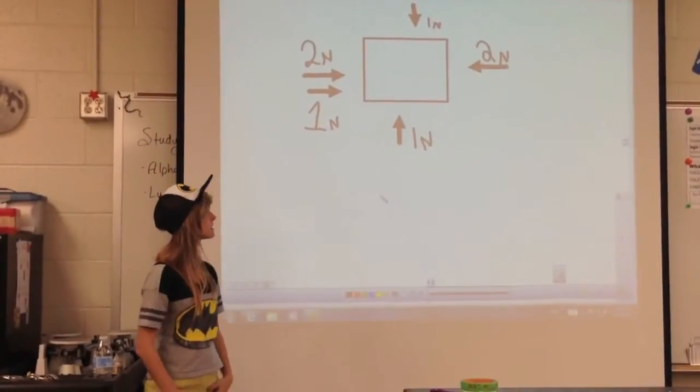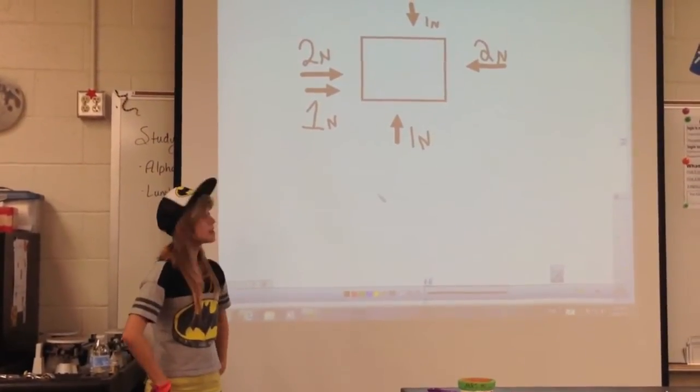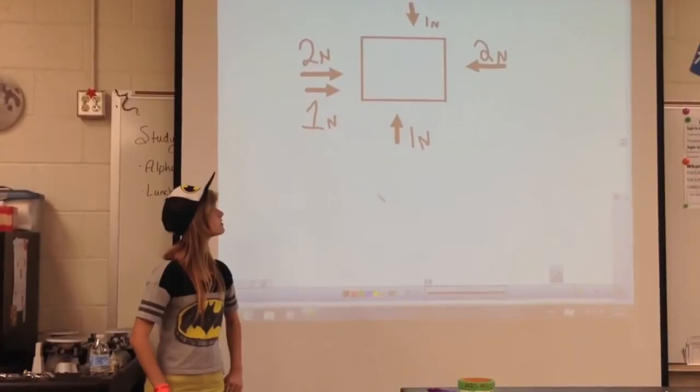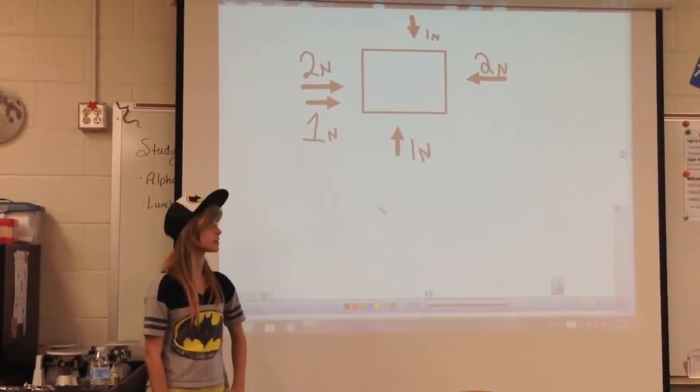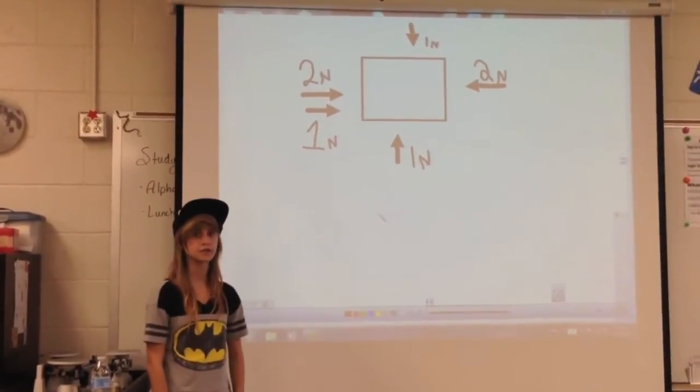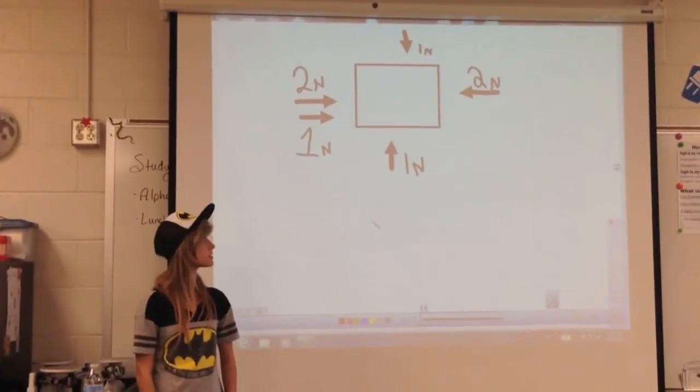This is also an example of an unbalanced force. You see, we still have two newtons and one newton acting to the right and two newtons acting to the left. The two and one newtons make three newtons and the two newtons stays.